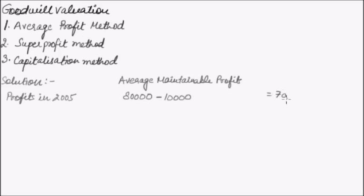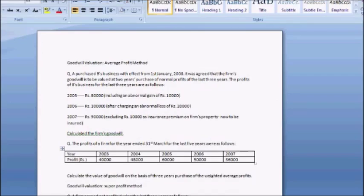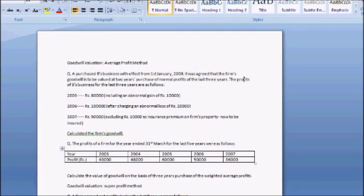For 2006, the profit was Rs. 1,00,000 and there was an abnormal loss of Rs. 20,000. We add this abnormal loss back into the total profit, giving us an Average Maintainable Profit of Rs. 1,20,000 for 2006.